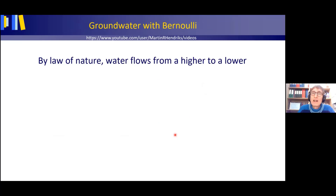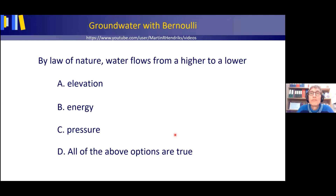Let's start with a quiz. By law of nature, water flows from a higher to a lower: (a) elevation, (b) energy, (c) water pressure, or (d) all of the above? Think about which option is correct.